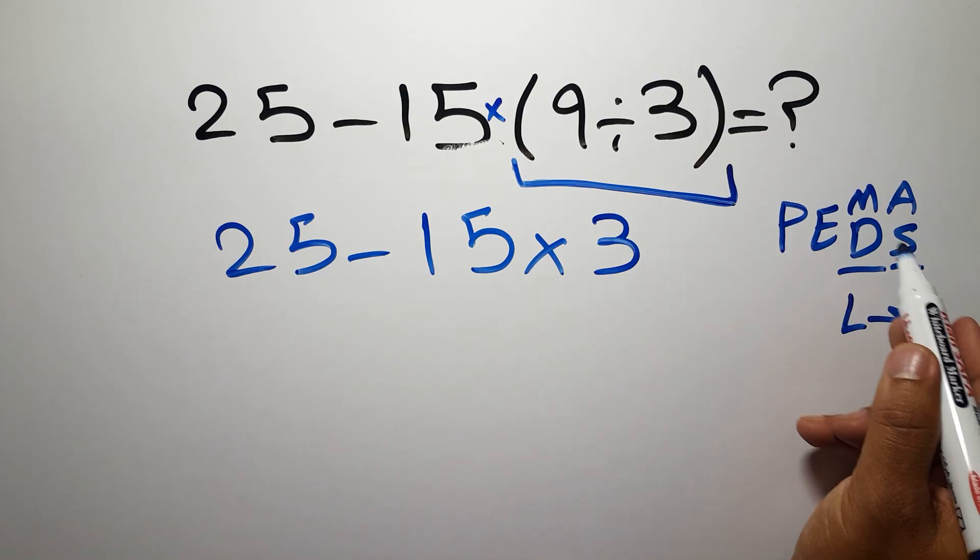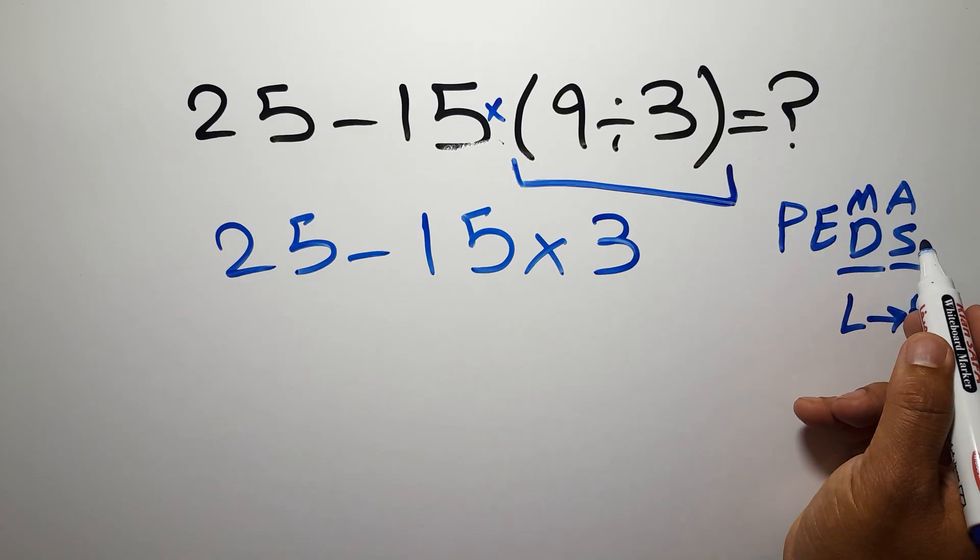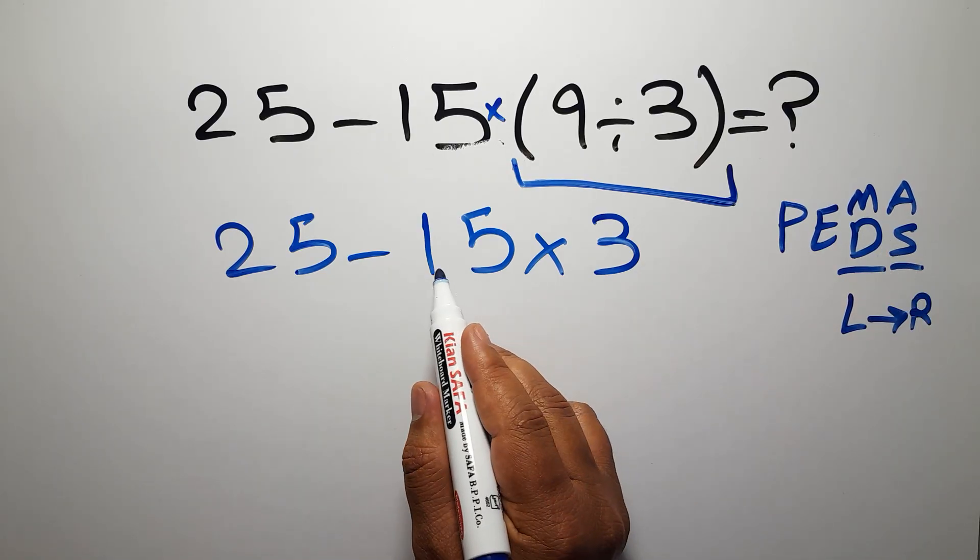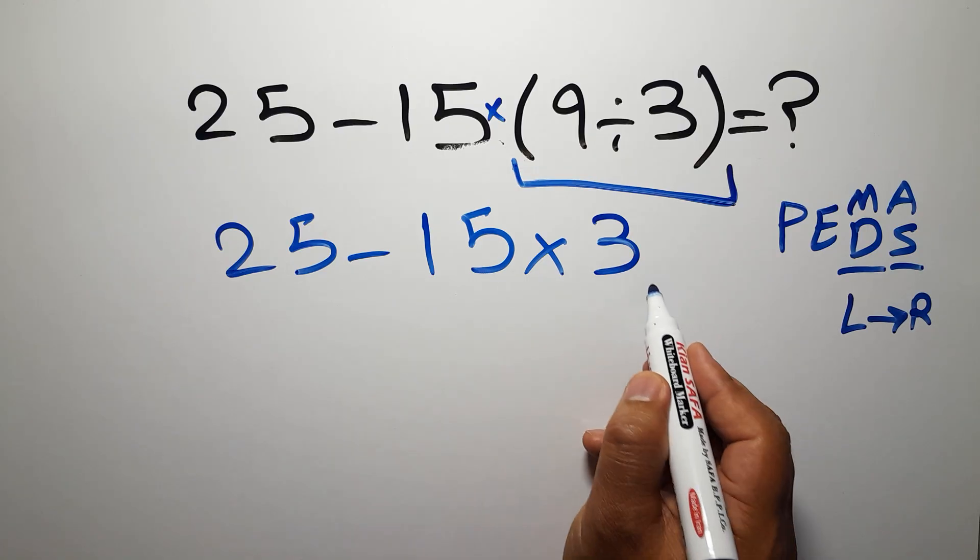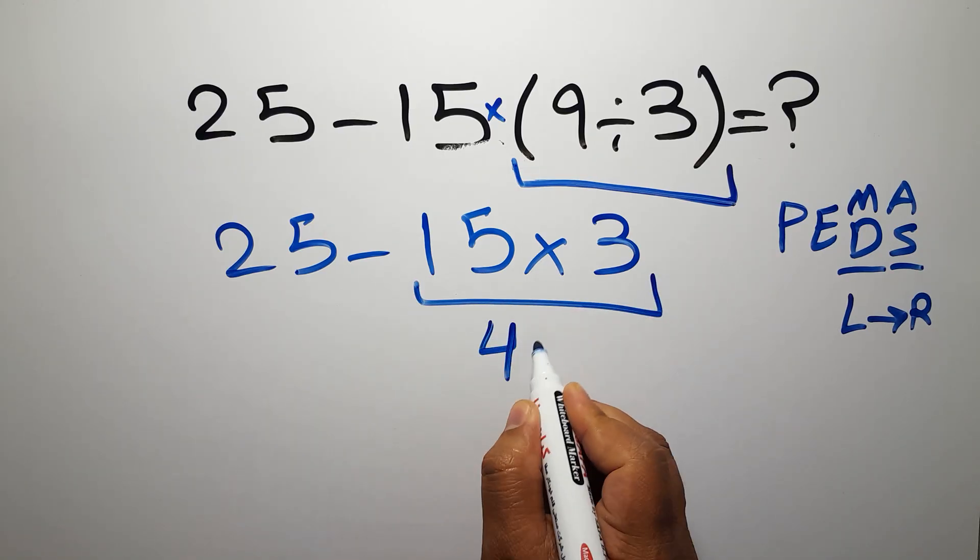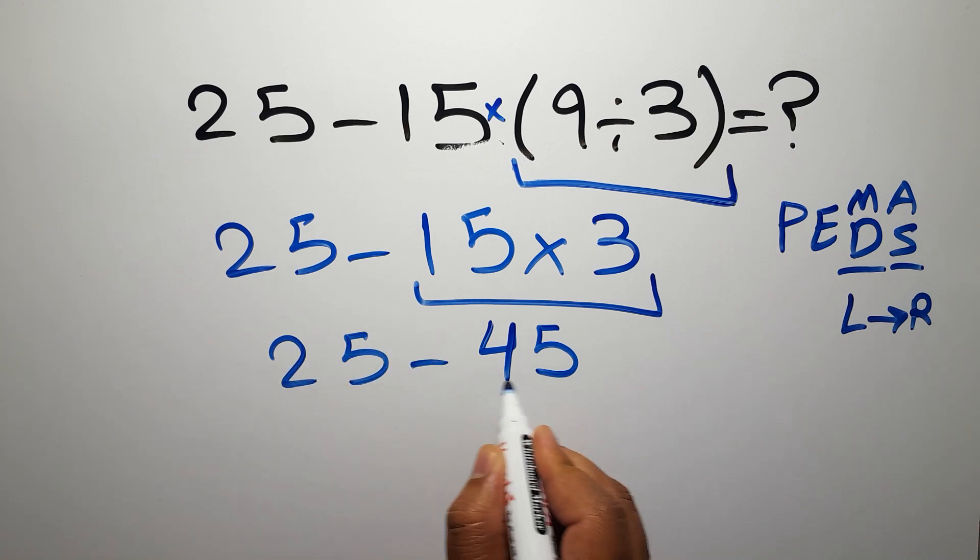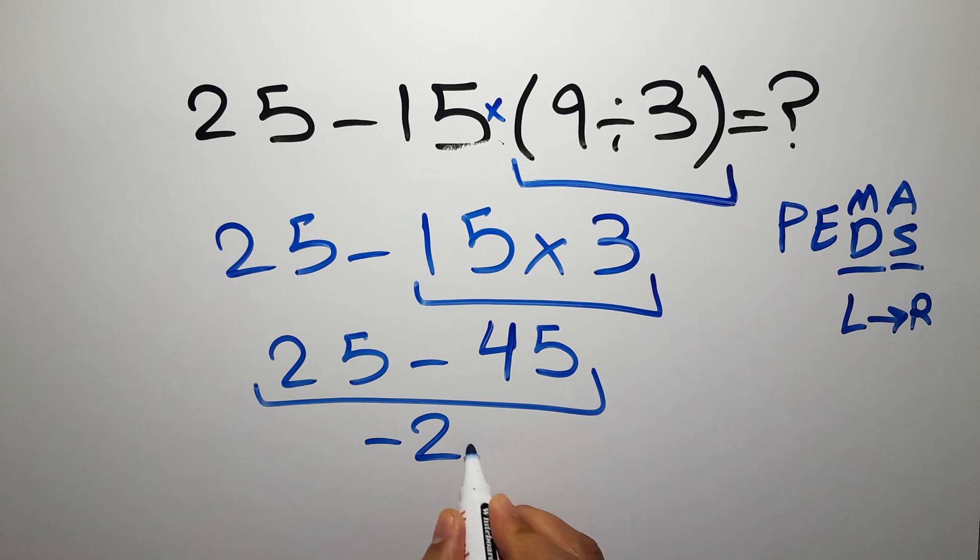Because in PEMDAS, multiplication comes before subtraction. So in this step, first we have to do this 15 times 3, which gives us 45. So we have 25 minus 45, which equals negative 20, and this is our final answer to this problem.